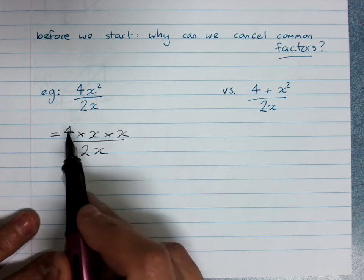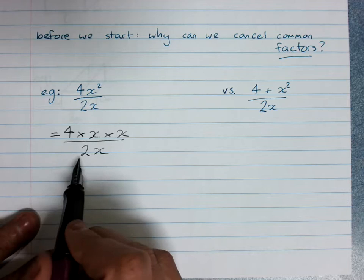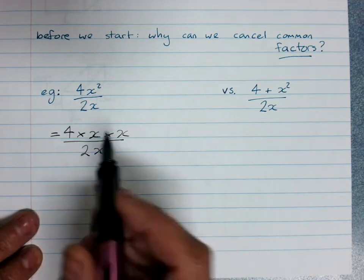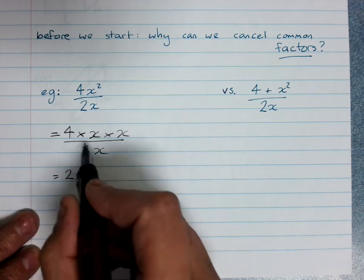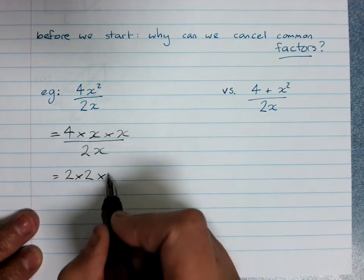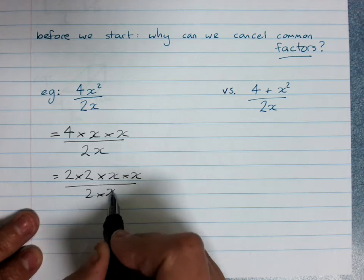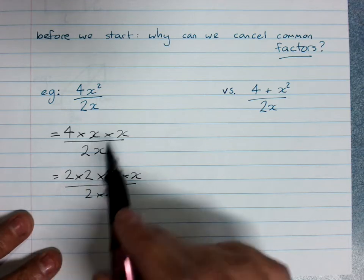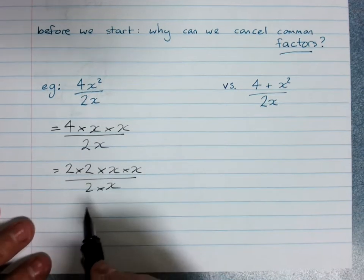Now I always say to simplify the fraction, and that involves cancelling out common factors too. So we look at the numbers and see, could I rewrite that as a multiplication where this number was involved? Yep, I can. I can write this as 2 times 2 times x times x on the top, and 2 times x on the bottom. Now, we would never have set out our working like this. This is just showing why cancelling common factors is okay.